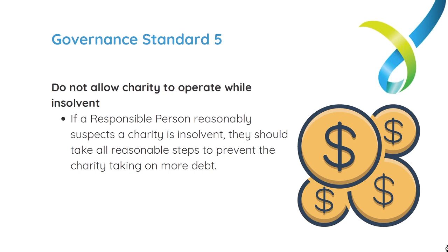The final duty covered in Governance Standard 5 is to not allow the charity to operate while insolvent. If a responsible person reasonably suspects that the charity cannot pay all of its debts when they become due — meaning it's facing insolvency — they should take all reasonable steps to prevent the charity from taking on more debt and manage the situation. We have a short guide to insolvency at acnc.gov.au/insolvency that can help identify the danger signs and know the steps to take if you are facing insolvency.